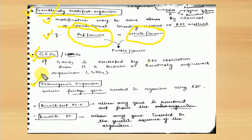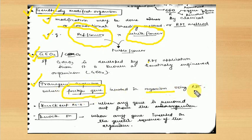The next term is transgenic organism. This term can be confusing — what is the difference between GMO, GEO, and transgenic? Transgenic is a specific type of genetically engineered organism in which a foreign gene is inserted into an organism using recombinant DNA technology. 'Trans' means different — a different source — and 'genic' relates to genes. So organisms into which any foreign gene is introduced are called transgenic organisms.